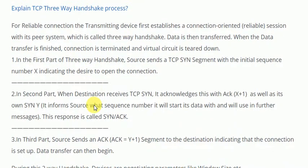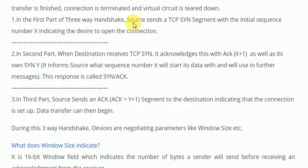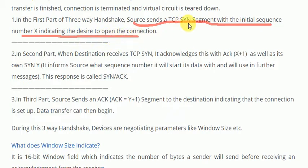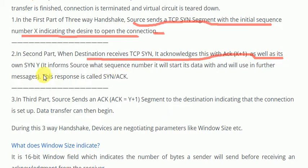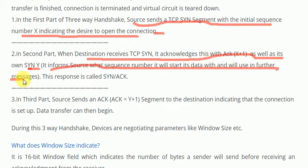In the first part of the three-way handshake, the source sends a TCP synchronization segment with an initial sequence number X, indicating it desires to open the connection. In the second part, the destination acknowledges with acknowledgement number X+1, as well as its own synchronization sequence number Y, informing the source what sequence number it will start its data with.